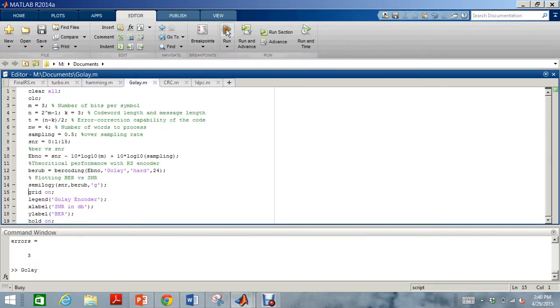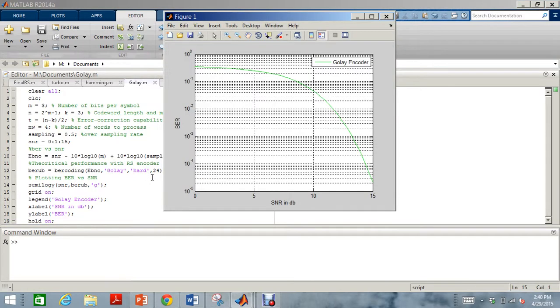Moving on to Golay codes. Golay codes is also similar to Hamming codes and this is the SNR versus the BER graph for the Golay encoder.